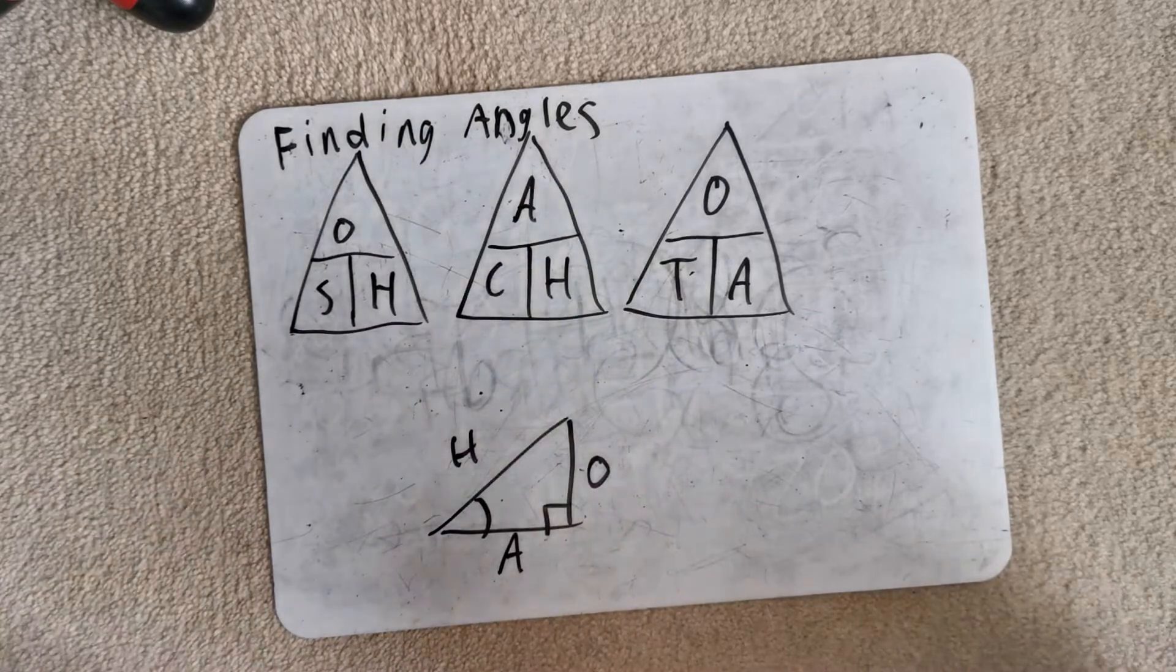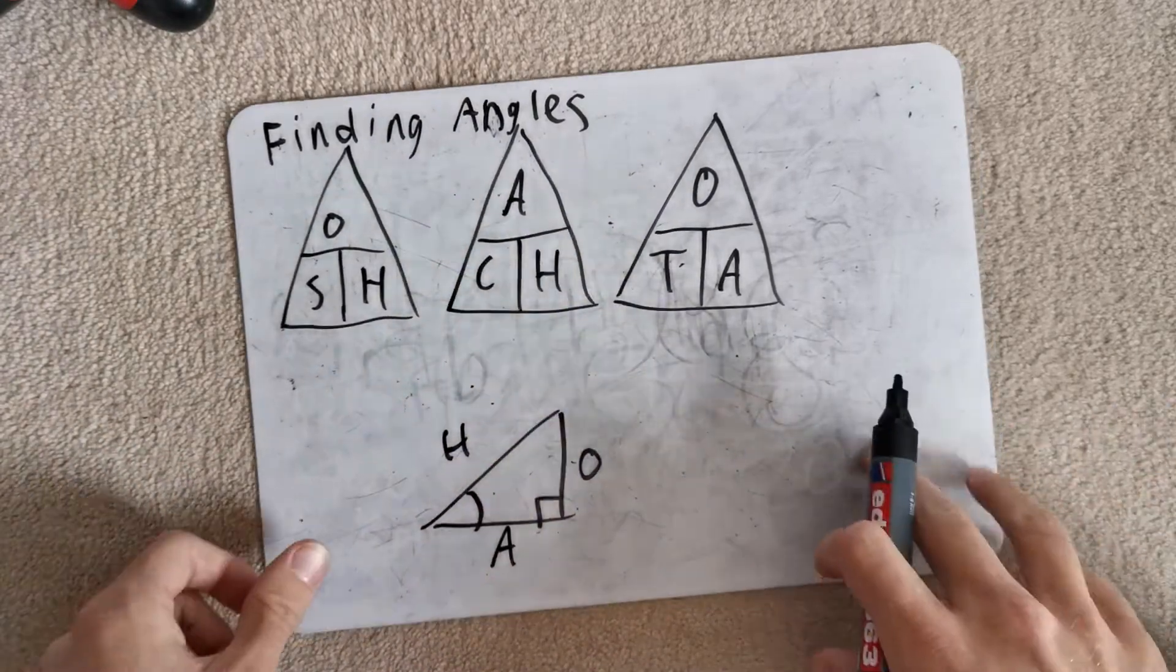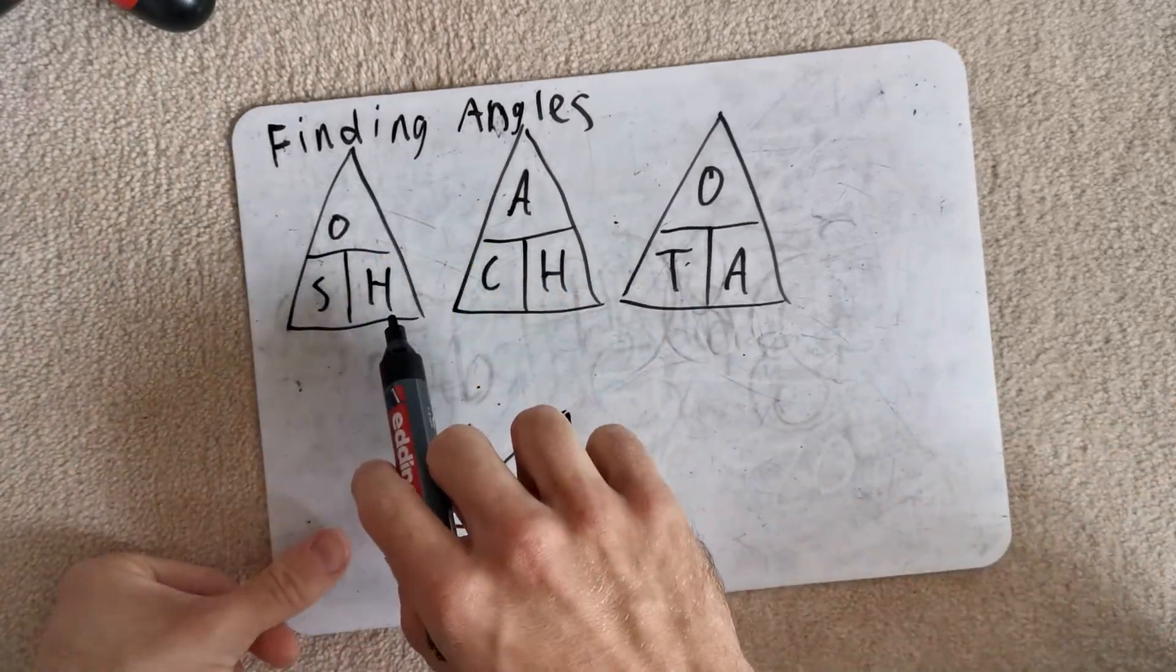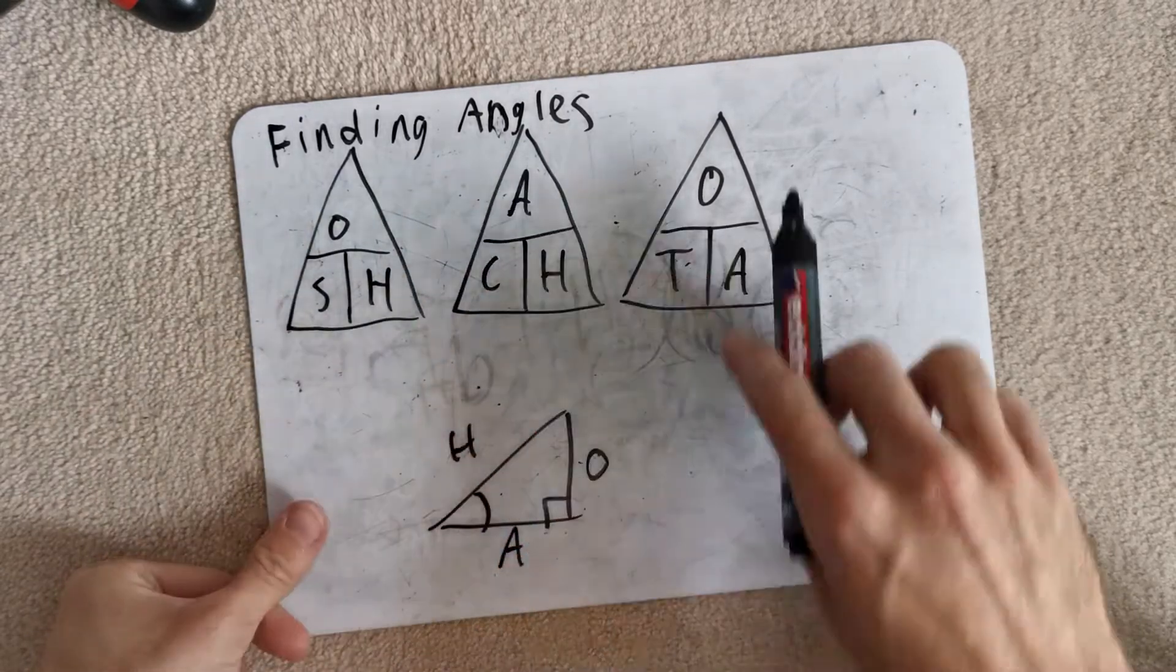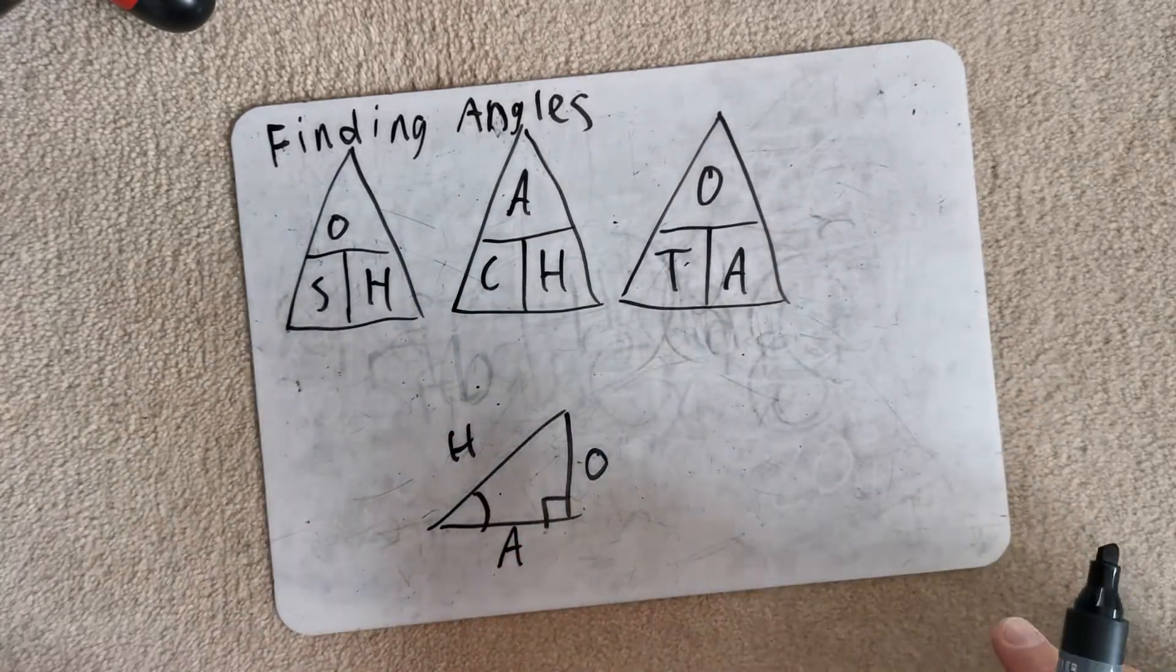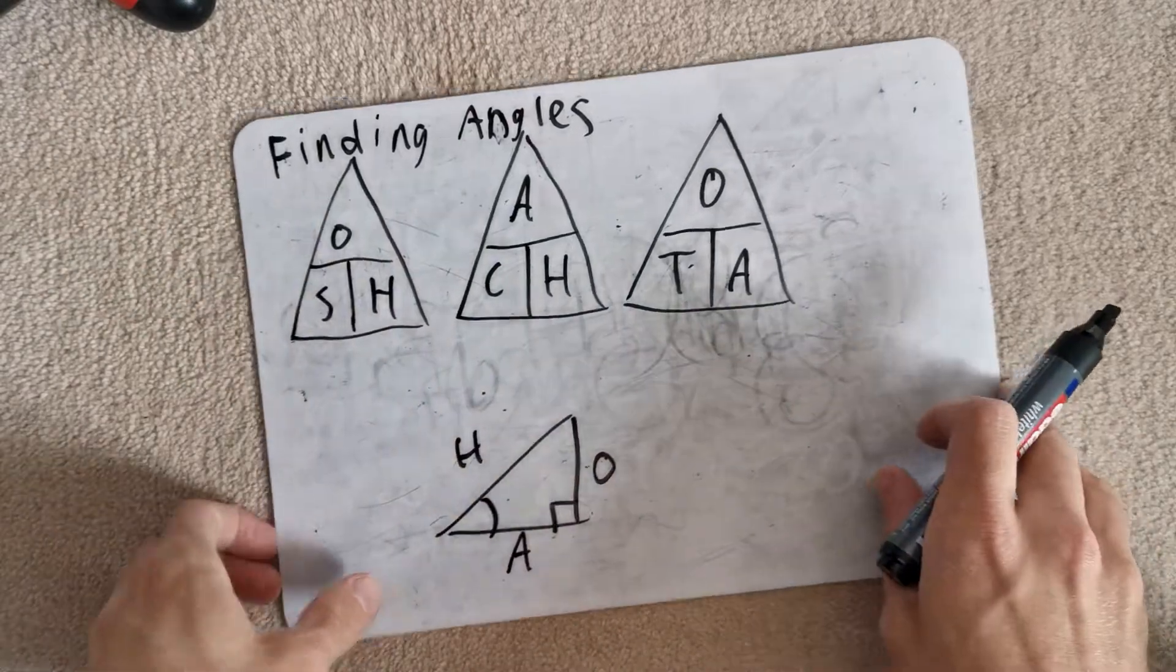That's because adjacent just means next to. Very quick recap. Remember, this is the triangle for sine, this is the triangle for cosine, this is the triangle for tangent as well. Let's get into a question, shall we?